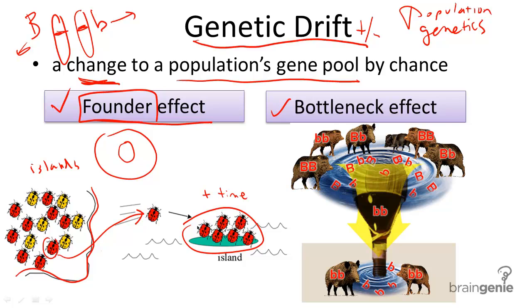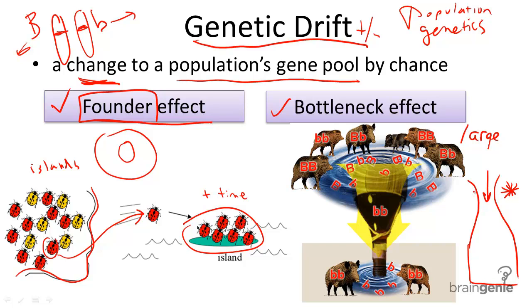The bottleneck effect occurs when a very large population — like buffalo or cheetahs — gets reduced. There's some event that occurs in the environment that might kill off or separate this population from the original ancestral population. Once a large number of these organisms are killed off, the gene pool is reduced to maybe a few different allele combinations, and they might be in different proportions — there's a proportion change in these allele frequencies.